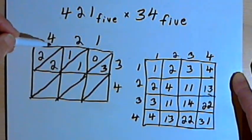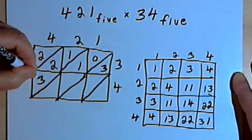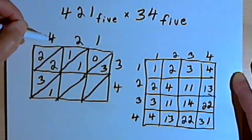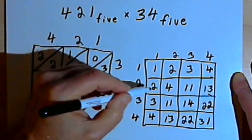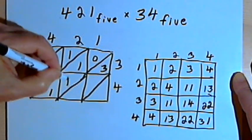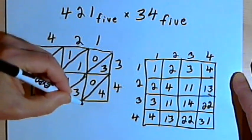Going down to 4 times 4. 4 times 4 was, I'm sorry, it was 31. What do I have? 2 times 4. 2 times 4 is 13. And 1 times 4 is 04.